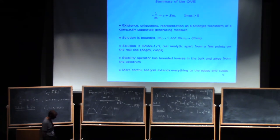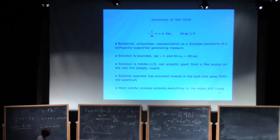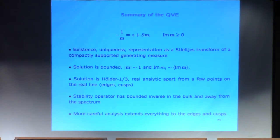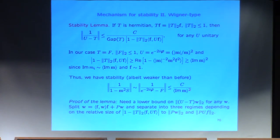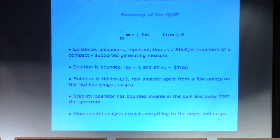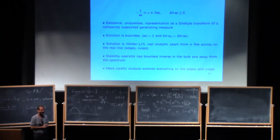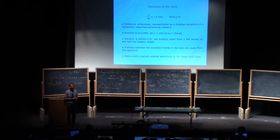Let me summarize what we know about the quadratic vector equation: existence, uniqueness, boundedness, Hölder continuity, and that the stability operator has a bounded inverse — at least in the bulk, where Im M is order one. There's a similar bound when you're well away from the spectrum. The only critical situation is at or near the edge, which requires more careful analysis. Any questions? Now we will go to the matrices — you should know all these things in order to proceed.